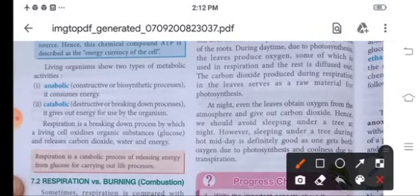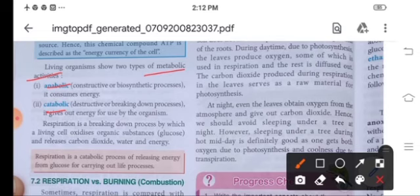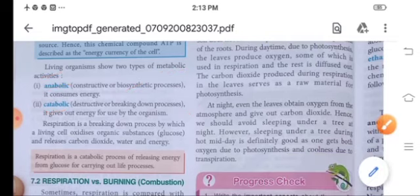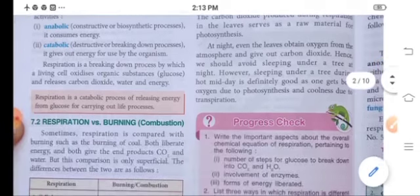Now living organisms show two types of metabolic activities: anabolic and catabolic. Anabolic is the constructive process in which energy is consumed, whereas catabolic is the destructive process in which energy is used by the organism. So respiration is a breaking down process in which living cells oxidize organic substances and release carbon dioxide, water and energy. So respiration is a catabolic process of releasing energy from glucose and this energy is utilized for carrying out life processes.